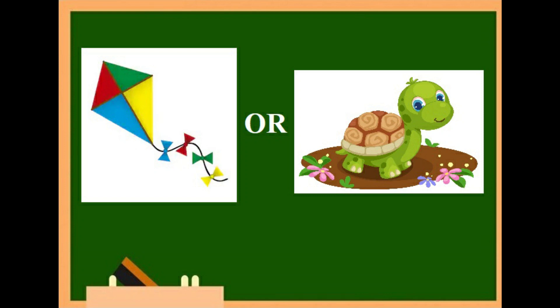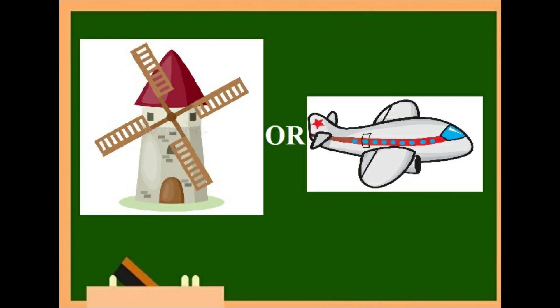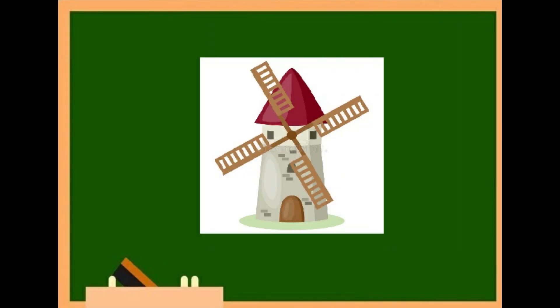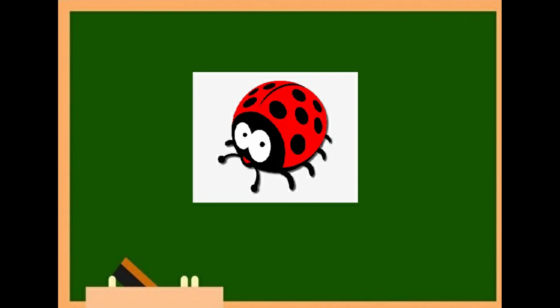Eighth: it flies in the air — a kite or a tortoise? Yes, a kite. Ninth: wind makes it move — a windmill or an aeroplane? Yes, a windmill. Tenth: it needs air to live — an insect or a ball? Of course, an insect.